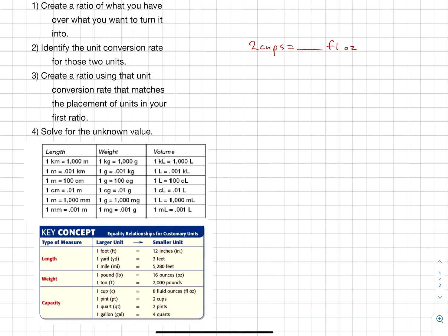And so I would, again, look at my chart right here. I want to find cups and fluid ounces. There it is right there. So I can set up my ratio, two cups over x fluid ounces equals, and again, I always like to write my units so then it keeps track of where I put stuff. It's that one cup over eight fluid ounces.